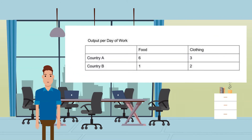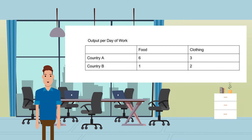Consider a table showing the output country A and country B can produce in a given period of time. Country A uses less time than country B to make either food or clothing — country A makes six units of food while country B makes one, and country A makes three units of clothing while country B makes two. In other words, country A has an absolute advantage in making both food and clothing.